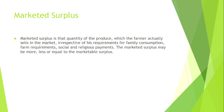Now, when marketed surplus is equal to marketable surplus: a farmer has total production of 20 quintals. He keeps 10 quintals for his family requirements and sells 10 quintals in the market. In this case, marketable surplus is equal to marketed surplus.